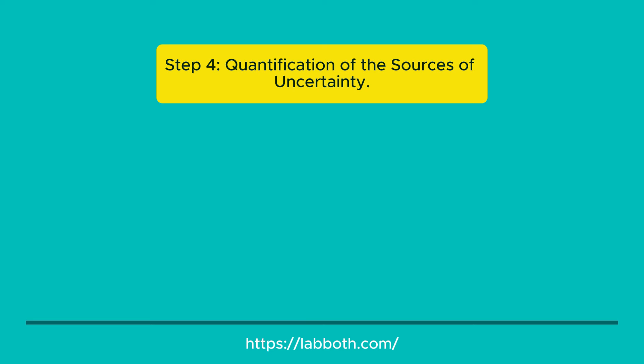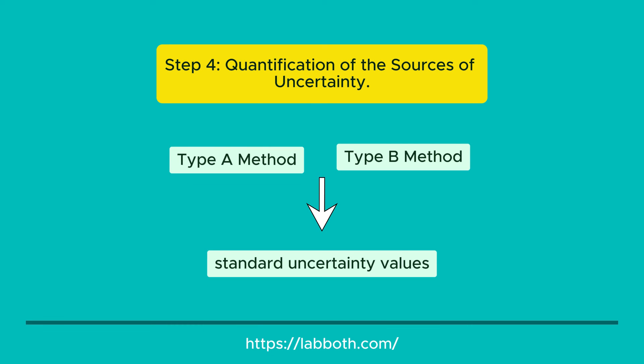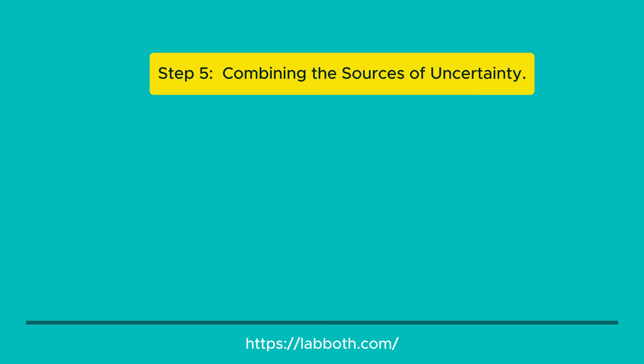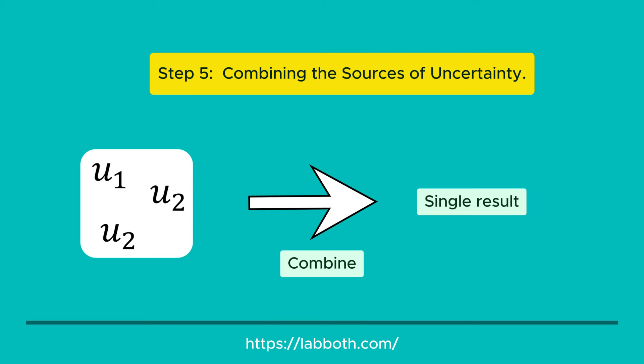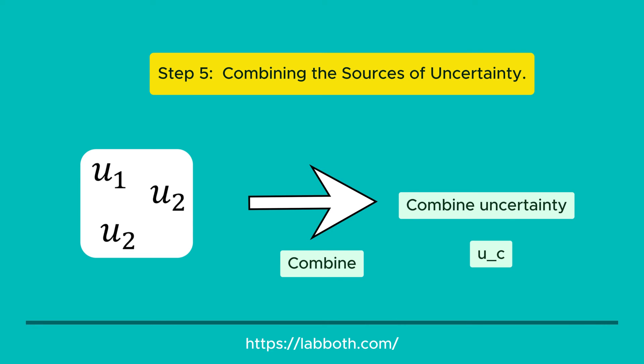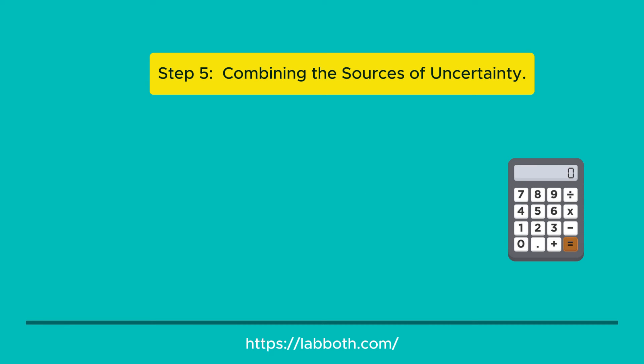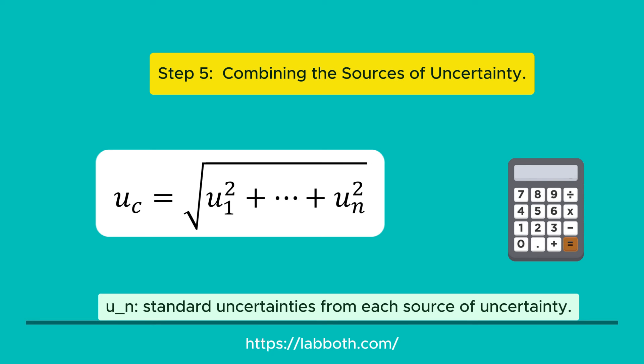Once you have implemented one or both methods, you obtain the standard uncertainty values. These standard values are combined into a single expression. Step 5: Combining the Sources of Uncertainty. After quantifying and converting them into standard uncertainties, you combine them into a single result called combined uncertainty, generally symbolized as U_C. To calculate it, use a typical error expansion function where U_N corresponds to each of the standard uncertainties from each source.